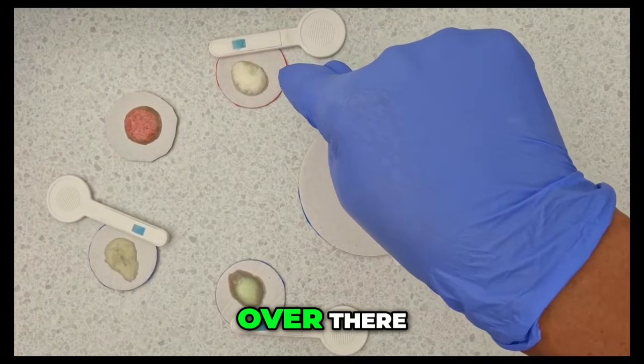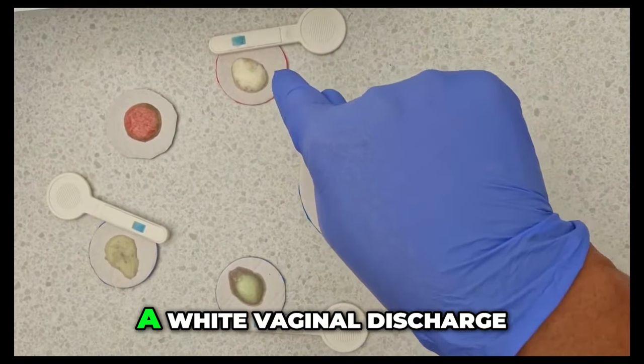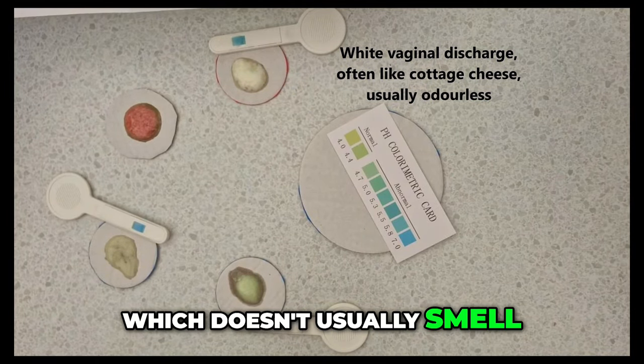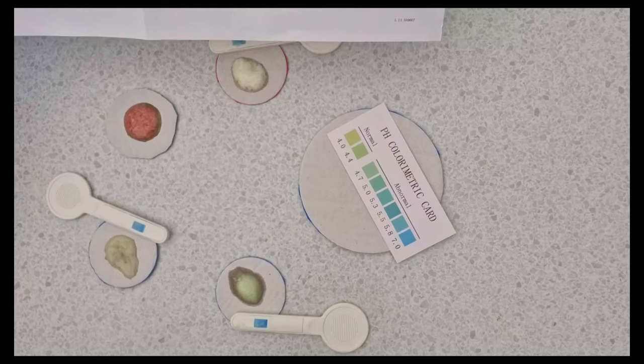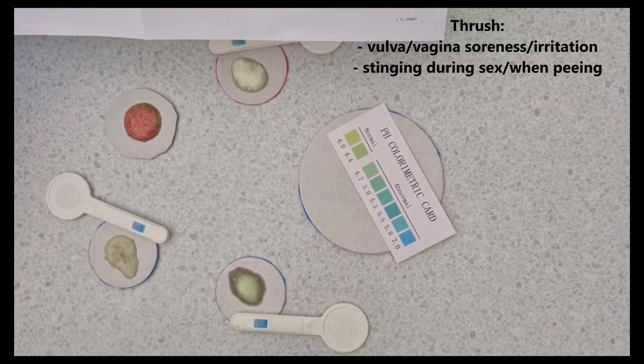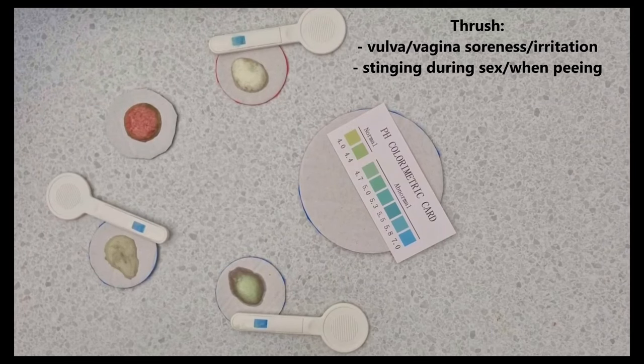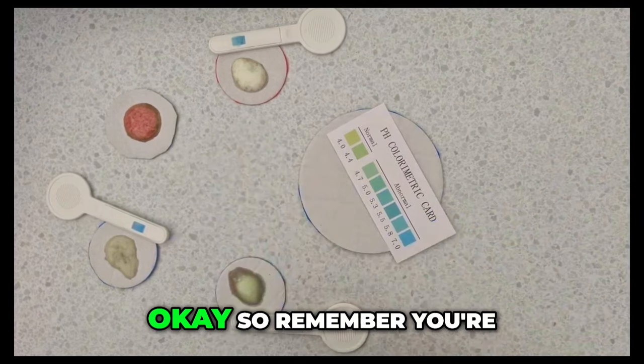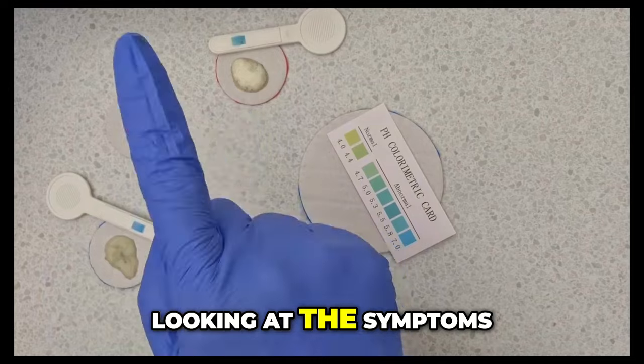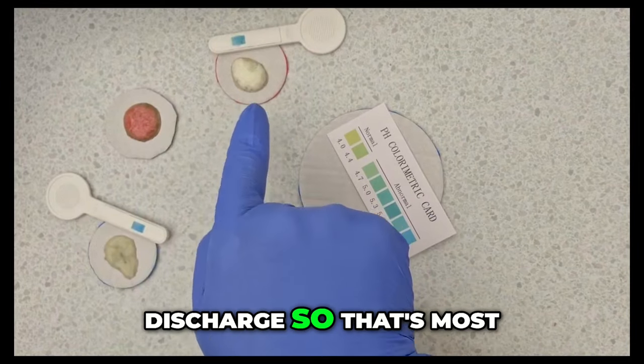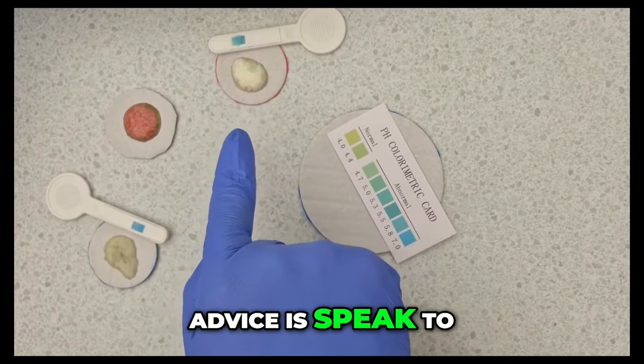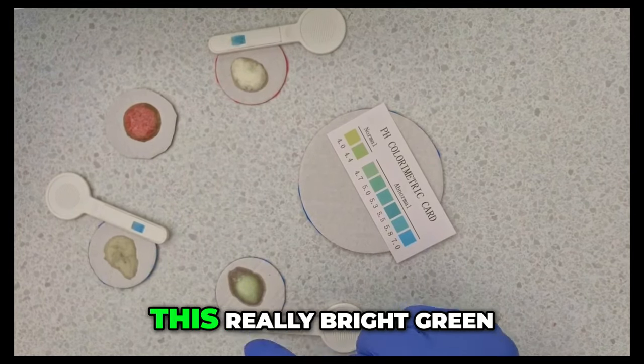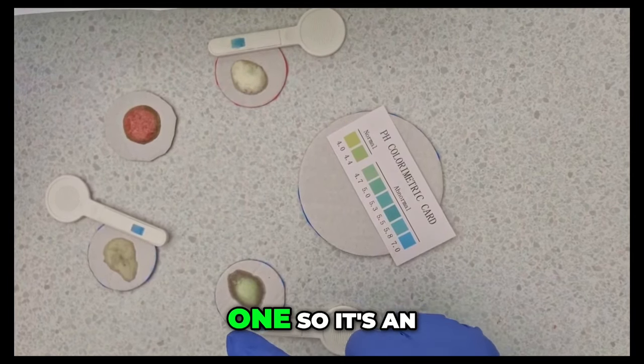So that first one that one over there that's thrush. A white vaginal discharge often like cottage cheese which doesn't usually smell. Symptoms you might have irritation and itching and irritation around the vagina. A soreness and stinging during sex or when you pee. So most likely thrush. So remember you're looking at the symptoms and the type of discharge. So that's most likely thrush and the advice is speak to your pharmacist or physician for treatment options.